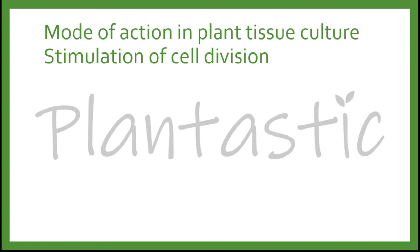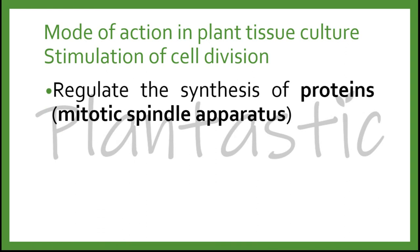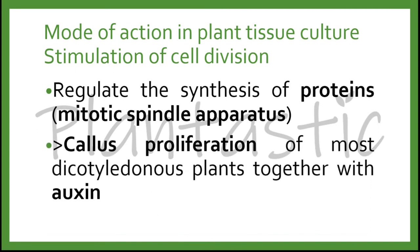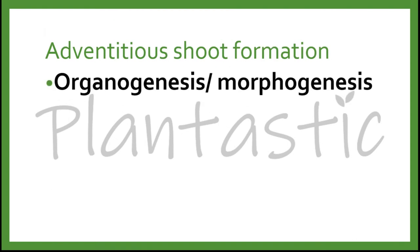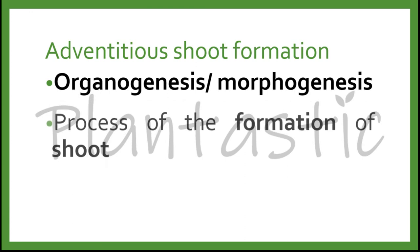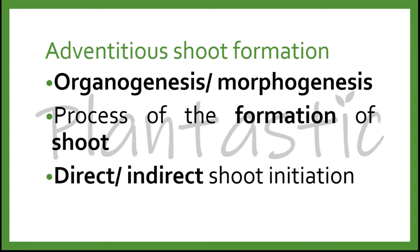Let's go into the mode of action in plant tissue culture. Cytokinin plays a role in stimulation of cell division by regulating the synthesis of proteins in mitosis, which are the mitotic spindle apparatus. Therefore, it can be involved in callus proliferation of most dicot plants together with osin. It also promotes advantageous shoot formation through organogenesis or morphogenesis, which are the processes of formation of shoot.